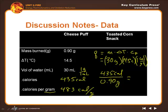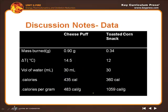If you do the same thing for the toasted corn snack, if you have 0.34 grams, temperature change is 12, volume of water is still 30, then 30 times 12 times 1 equals 360 - that's the number of calories. How do we get the calories per gram? What do we divide 360 by? 0.34, and that's 1,059 calories per gram.